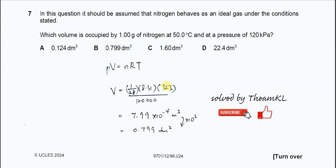Question 7. In this question, it should be assumed that nitrogen behaves as an ideal gas under the conditions stated. Which volume is occupied by 1 gram of nitrogen at 50 degrees C and a pressure of 120 kilopascals? First, you need to convert all these units to the suitable units in the combined gas law, PV equals nRT.